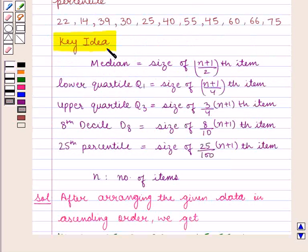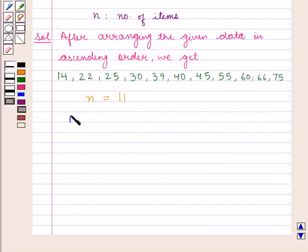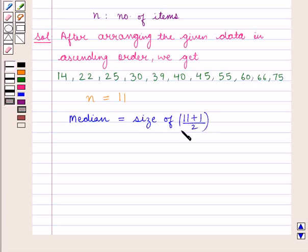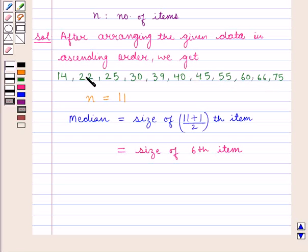From the key idea, median is given by size of (n+1)/2 th item. Therefore, median is equal to size of (11+1)/2 th item, which is equal to size of the 6th item. And from the series, the 6th item is 40. Therefore, median is equal to 40.